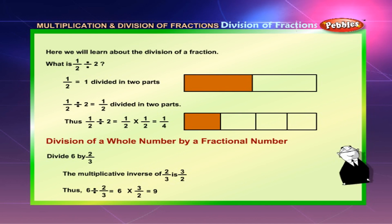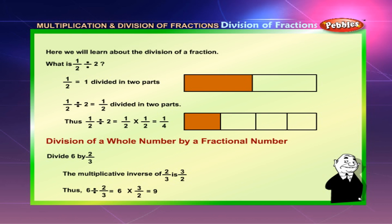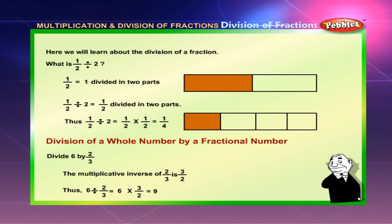Division of a fraction by a whole number: We will learn about the division of a fraction. What is 1 by 2 divided by 2? 1 by 2 is equal to 1 divided into 2 parts. 1 by 2 divided by 2 is equal to 1 by 2 divided into 2 parts. Thus, 1 by 2 divided by 2 equals 1 by 2 into 1 by 2, which is equal to 1 by 4.